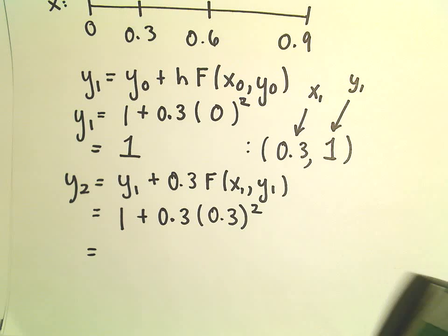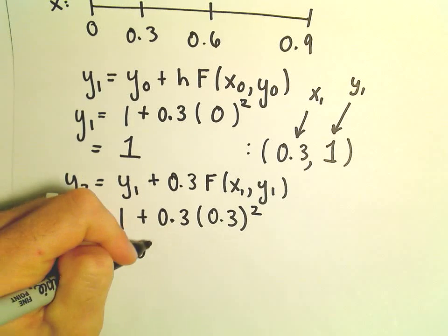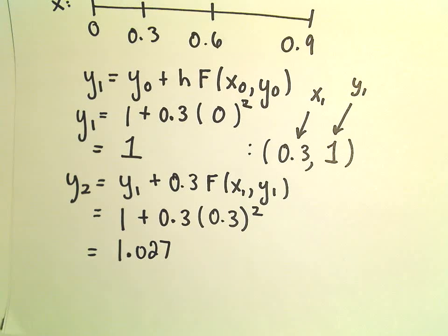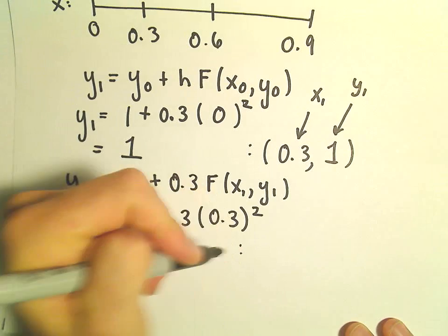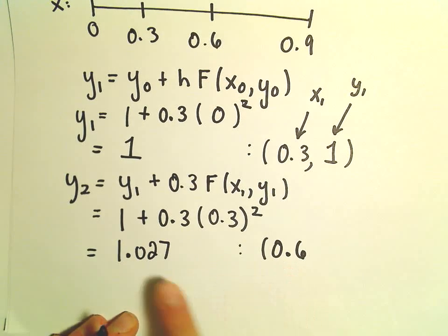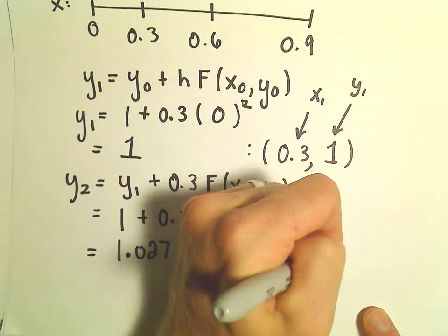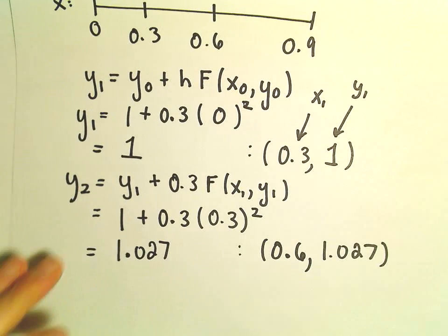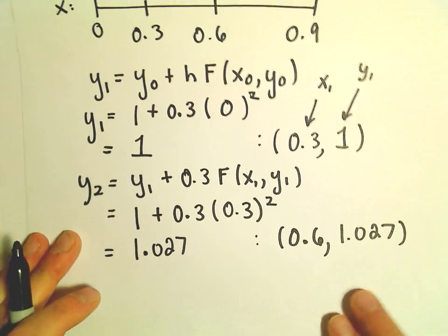So we've got 0.3 cubed. That shouldn't be too terrible. Plus 1. So 1.027. That's going to be our approximation. So the approximate y value that would go with 0.6 would be the y value of 1.027. And now we have to simply do this one more time.